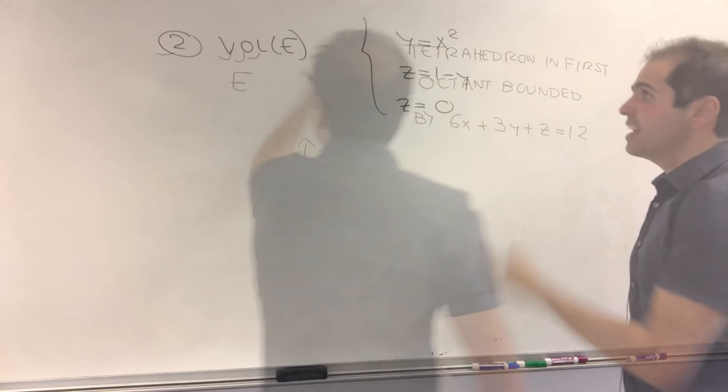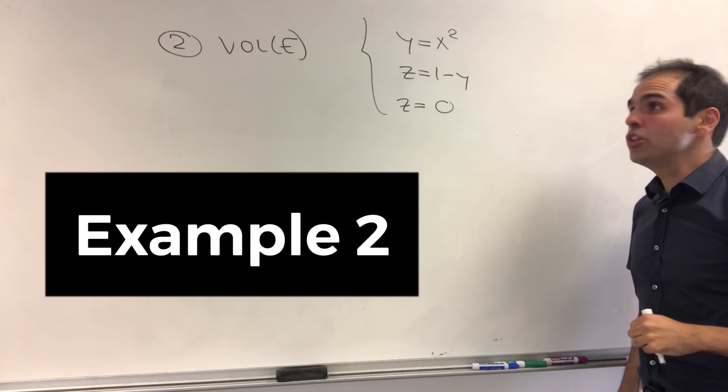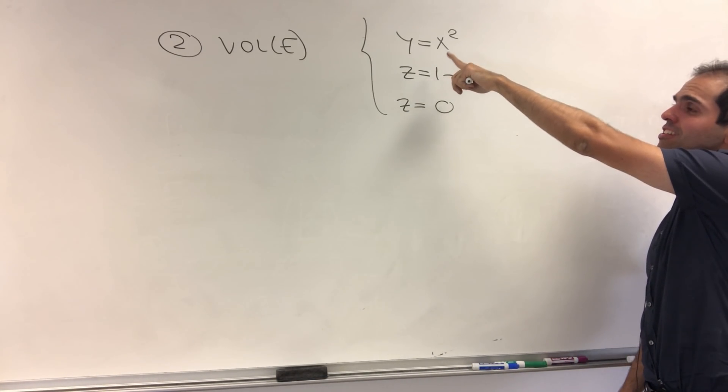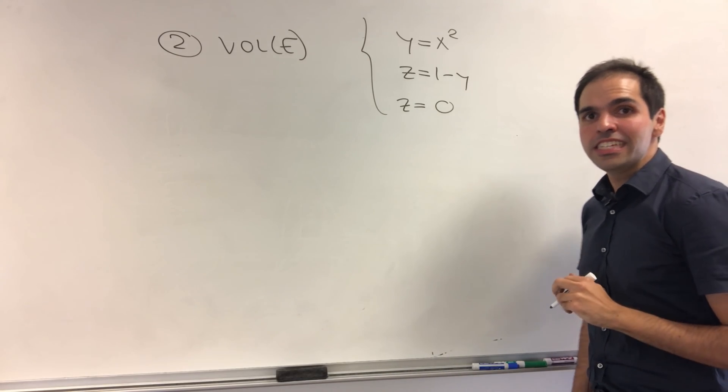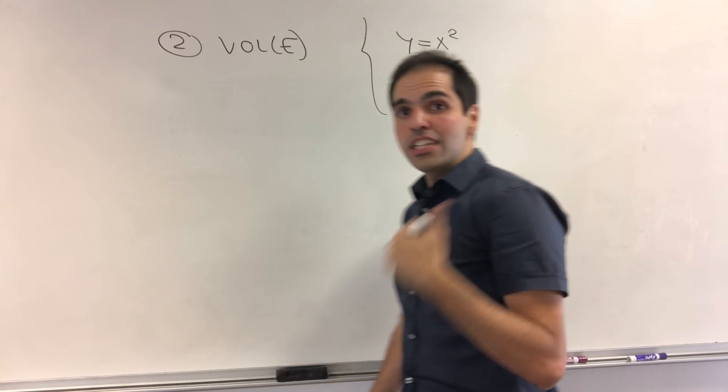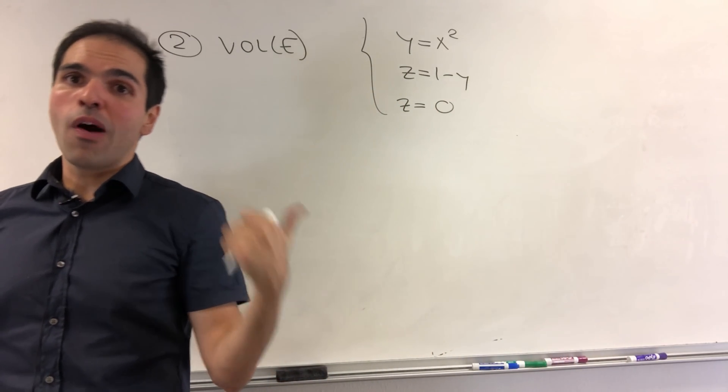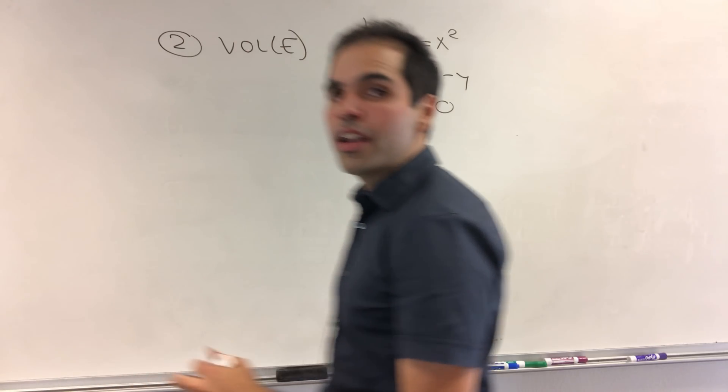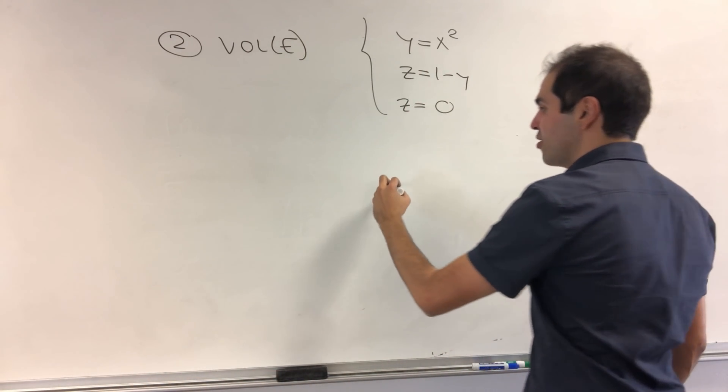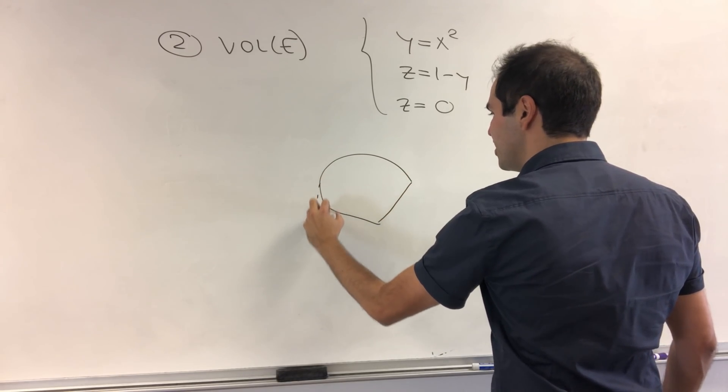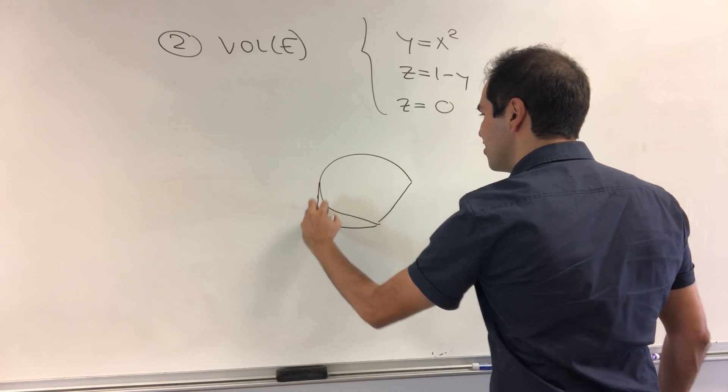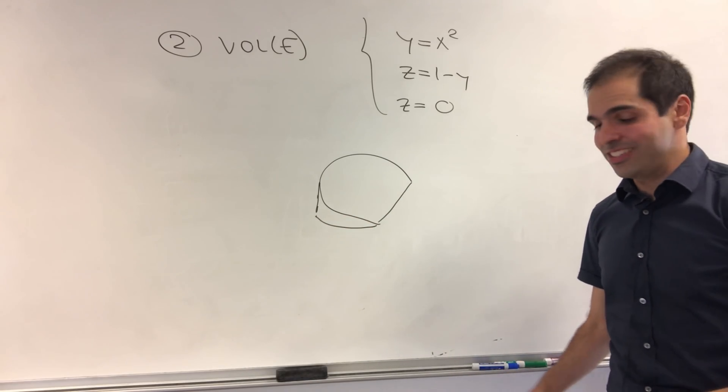The next one is simply to find the volume of a region where the region is bounded by y equals x squared, z equals 1 minus y, and z equals 0. This one's nice because it illustrates volume as a triple integral of 1. And also, it's slightly hard to draw. But essentially, what it looks like, it's like a gouda cheese. And again, there's a video on that on my channel as well.